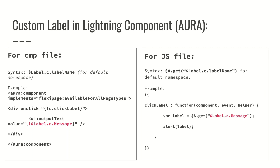To use a custom label in an Aura component, the syntax in the template is $Label.c.labelName, where 'c' is the default namespace. In the JavaScript controller file, the syntax is $A.get('$Label.c.labelName'). The label name in this case is 'message', as you can see.